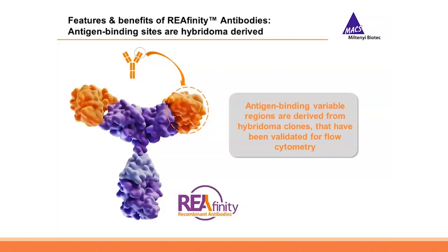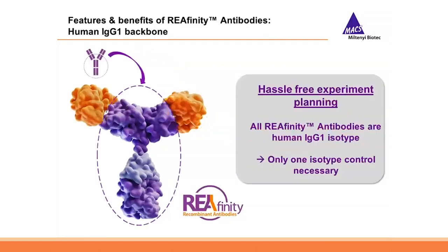What makes our antibodies so special? The antigen binding site of our recombinant Reaffinity antibodies is derived from hybridoma clones validated for flow cytometry, meaning the binding affinity is not altered compared to the hybridoma clone. The backbone of all Reaffinity antibodies is of the human IgG1 isotype. This was chosen because IgG1 is a well-characterized subclass, and it simplifies experiment planning since you can use the same isotype control for all your Reaffinity antibodies.